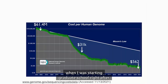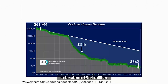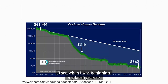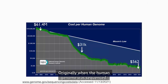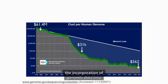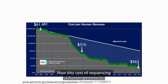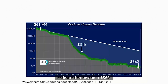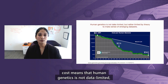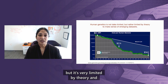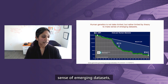When I was starting graduate school right after the draft sequence of the human genome was published, the cost of sequencing a genome was estimated to be about $61.4 million. When I was beginning my faculty career just over a decade ago, the cost had dropped to $31,000. The original goal was a $1,000 genome to enable incorporation of genomic data into routine medical care. Today, as you are viewing this talk, we have outpaced that — the cost is estimated to be about $562. This amazing change in cost means that human genetics is not data limited, but is very limited by the theory and frameworks with which to make sense of emerging datasets — and that's what I want to talk to you about today.